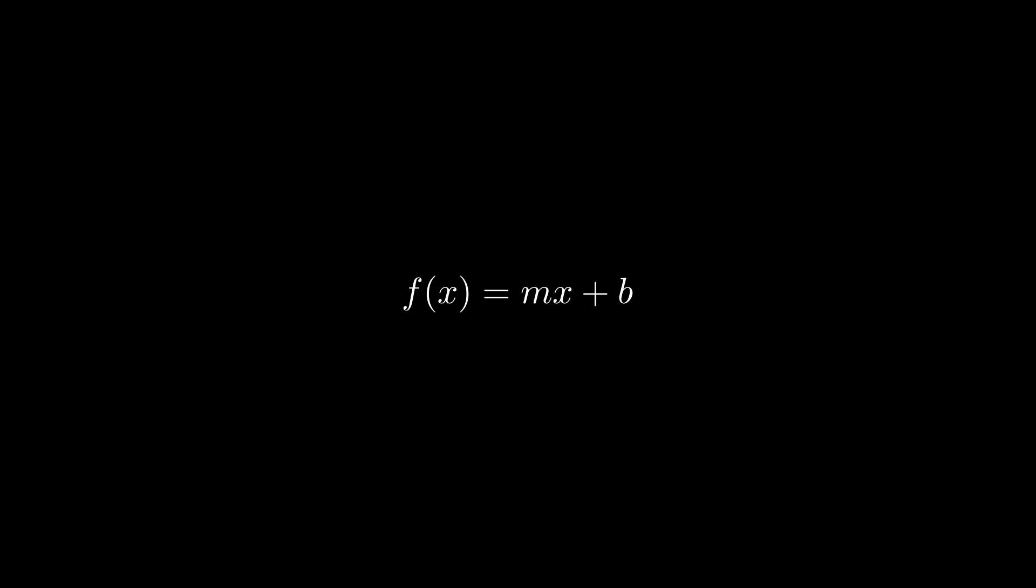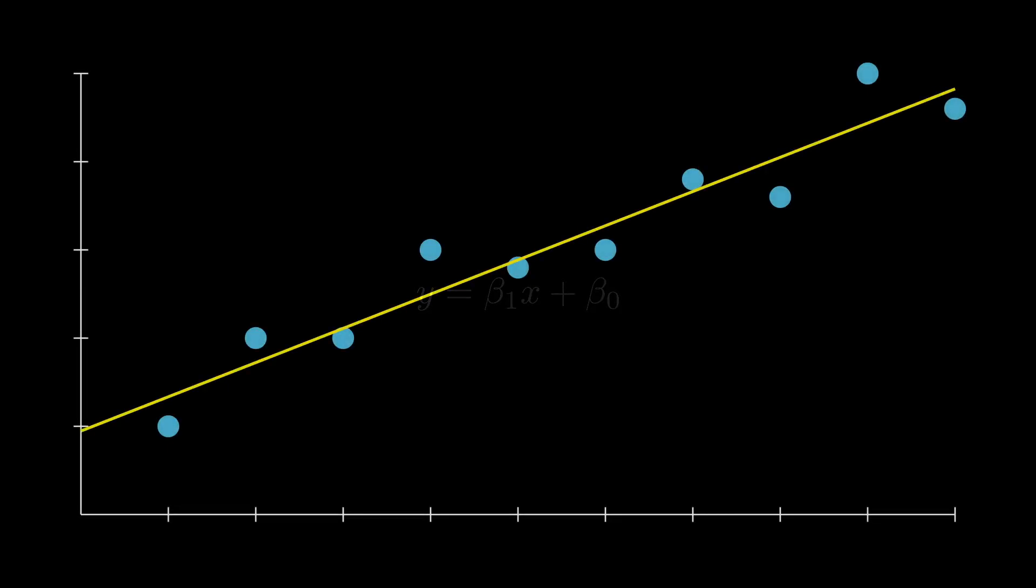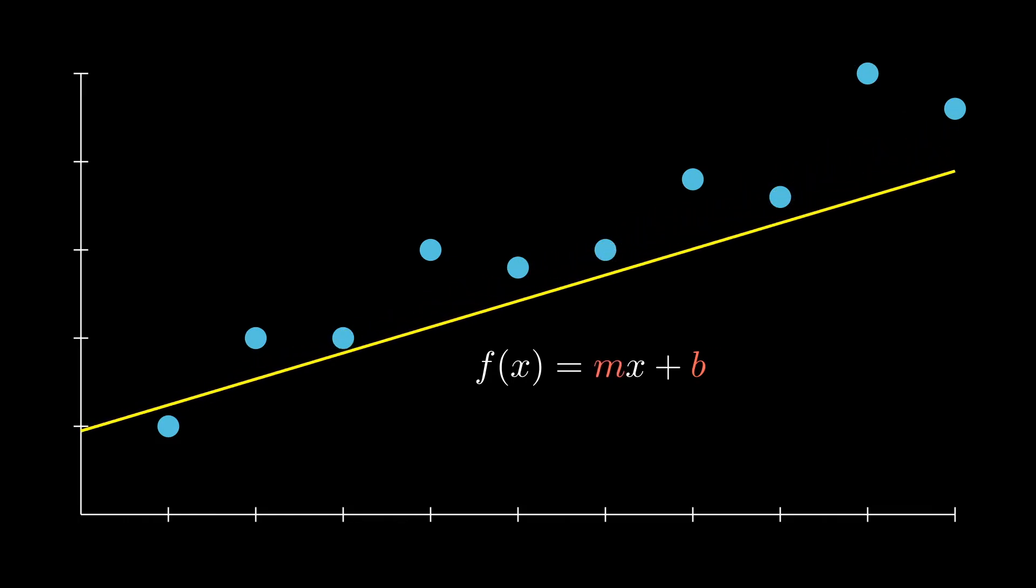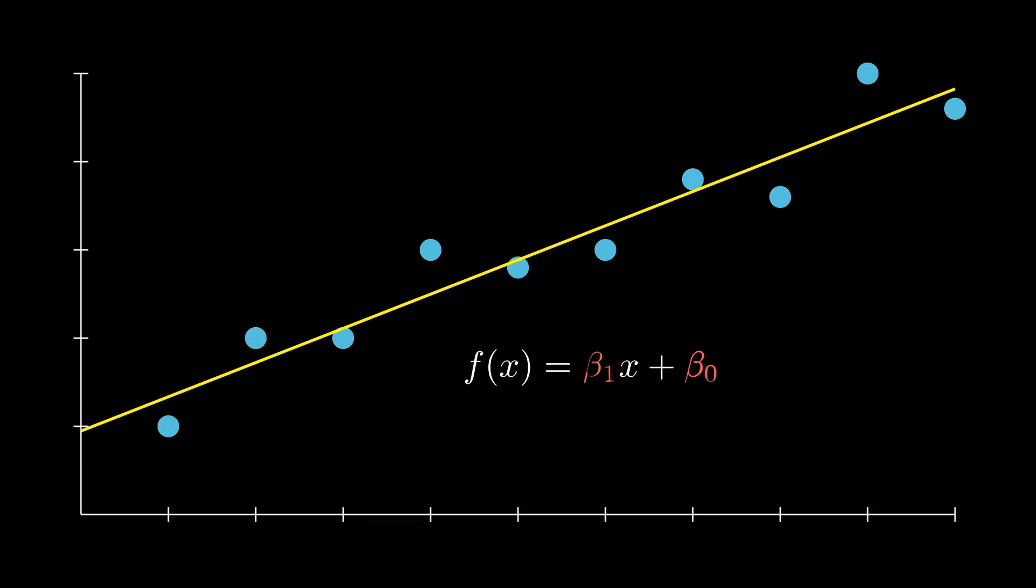It's likely you'll see the coefficients m and b expressed as beta 1 and beta 0 respectively. So what do the m and b coefficients do? The m or beta 1 coefficient controls the slope of the line. The b or beta 0 controls the intercept of the line. In machine learning, we also know it as the bias. These two coefficients are what we are solving for in linear regression.